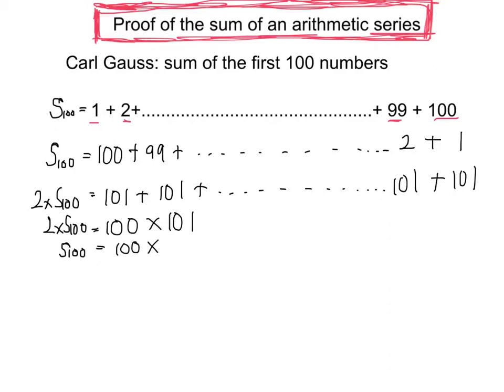Divided by 2, I'm going to get 10,100 divided by 2, which gives me 5,050.